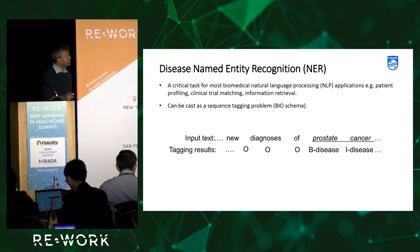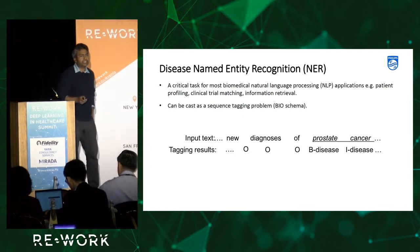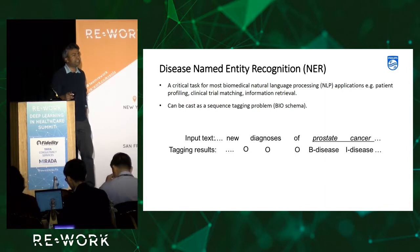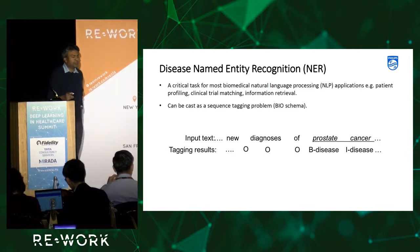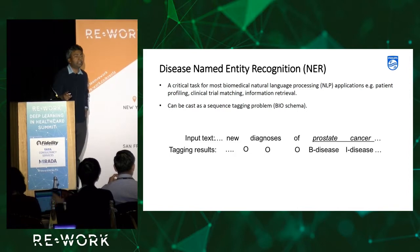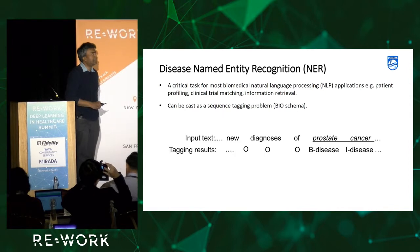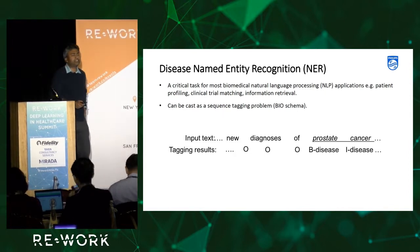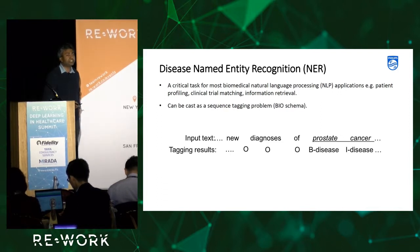In the disease named entity recognition task, it's a fundamental NLP task — essentially information extraction, or you could say it's a tagging problem. In biomedical natural language processing applications, disease named entity recognition is an essential component because it can be applied for downstream tasks like patient profiling, clinical trial matching, and information retrieval.